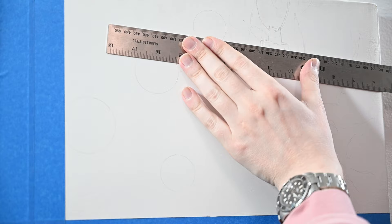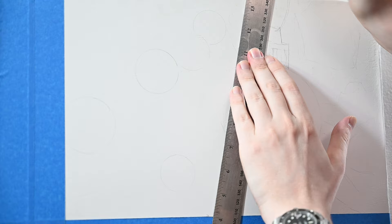This next part isn't necessary, but if you want to clean up these lines, I recommend using a ruler and you could just kind of square up these angles here and try to get everything in a little bit sharper than what you did initially, just freehand.